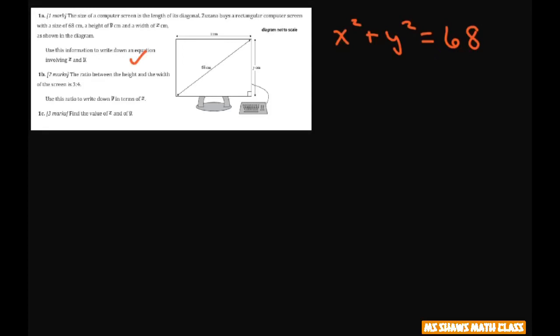Then for B, it says the ratio between the height and width of the screen is 3 fourths.